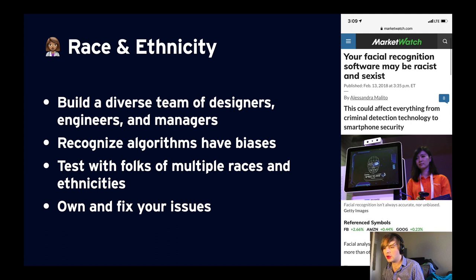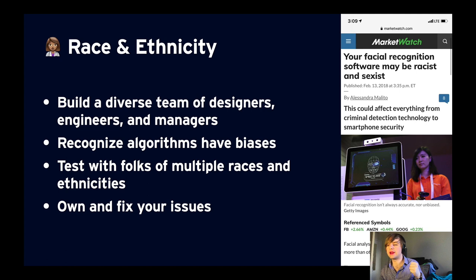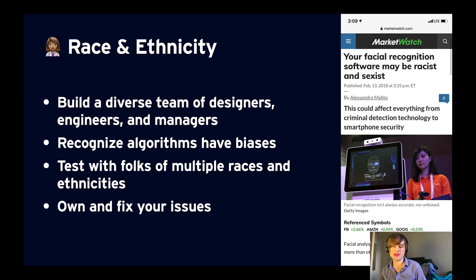I also want to talk about race and ethnicity, which is just as important. You may have seen stories about apps on the store having racist or sexist algorithms — facial recognition failing to recognize black and brown people, selfie tuning apps with racist filters. This is completely unacceptable for our industry. There's no API solution to automatically not build racist products, but there are common-sense things we can do: build diverse teams of designers, engineers, and managers who will spot these issues before you ship. Recognize that even machine-learning-built algorithms can have biases, and test before release with folks of multiple races and ethnicities to spot these issues. When you find them, it's our job as developers to own and fix these problems.